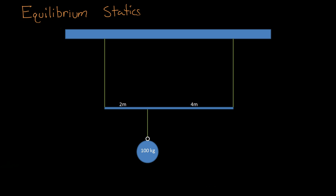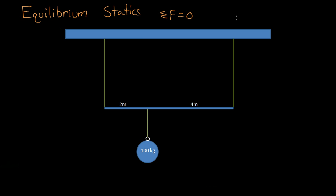To have true equilibrium statics, you need two very important things: the summation of the forces — adding all the forces acting on a body — to equal zero, and in addition, the summation of all the moments to equal zero as well.